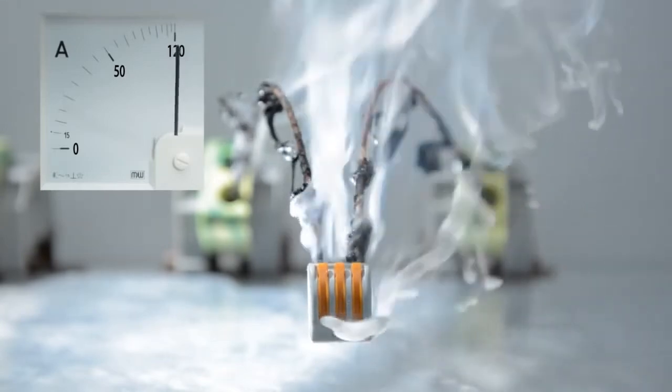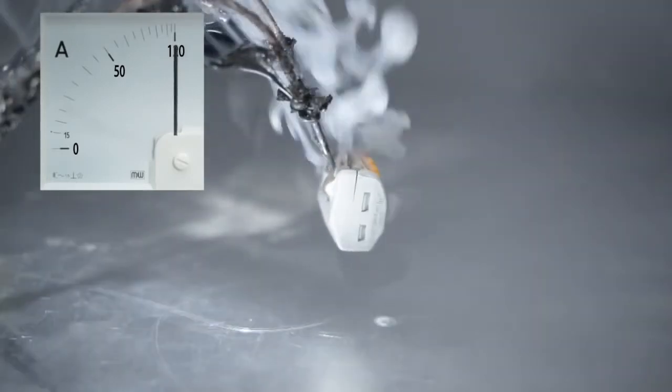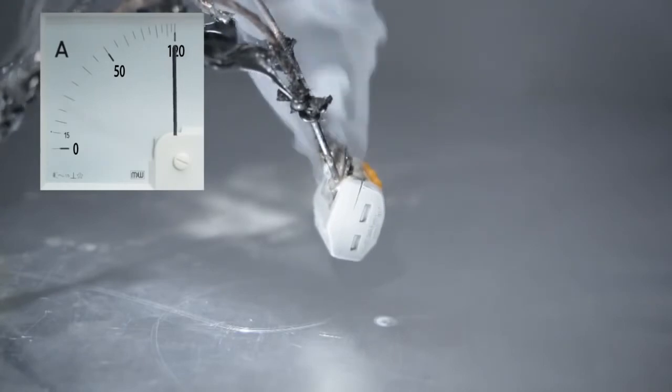The connector housing will only melt after a prolonged overload and will eventually drop off the contact. The contact is still intact and the wires remain securely connected.